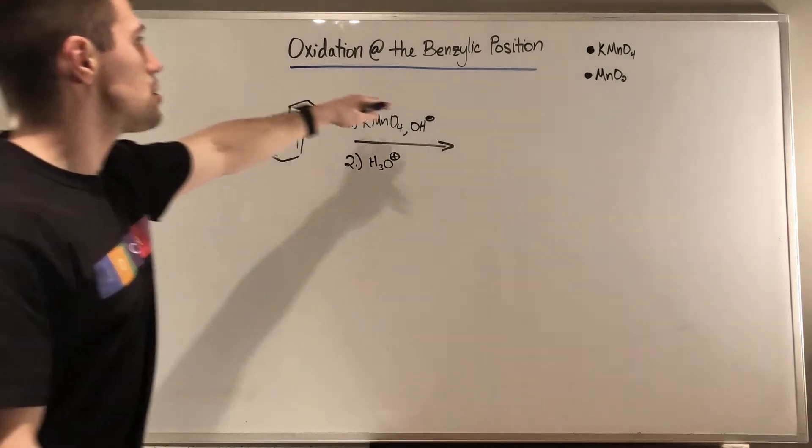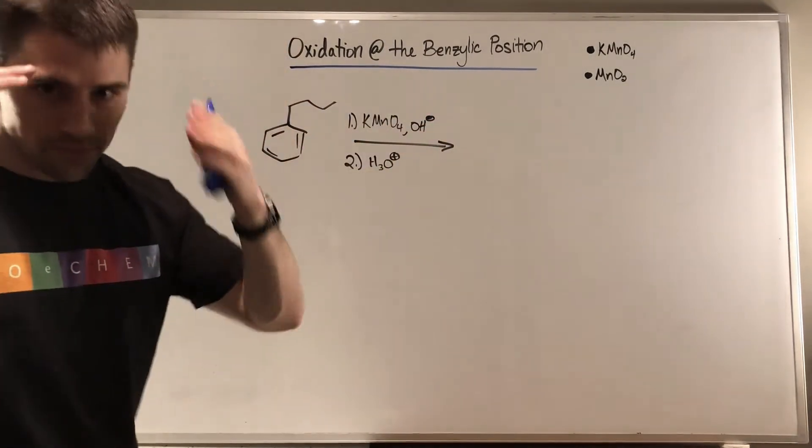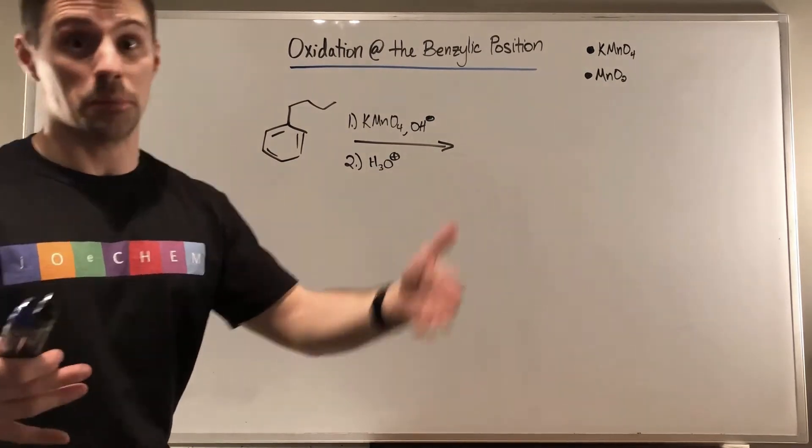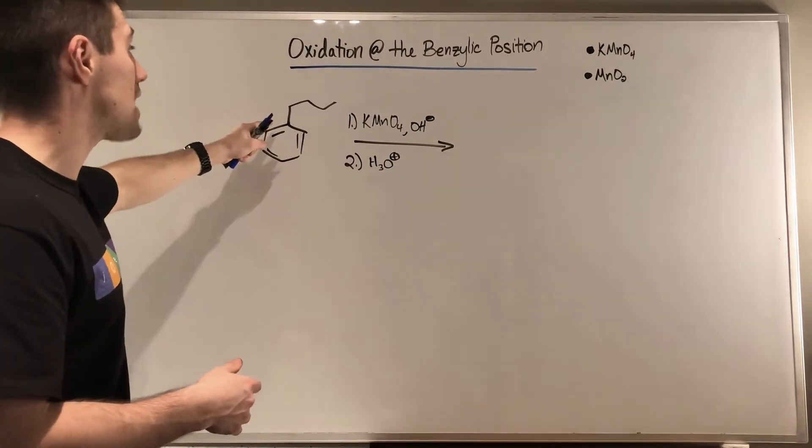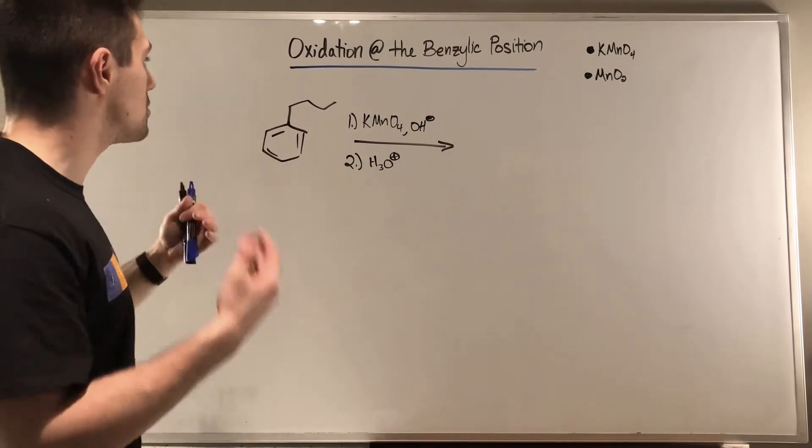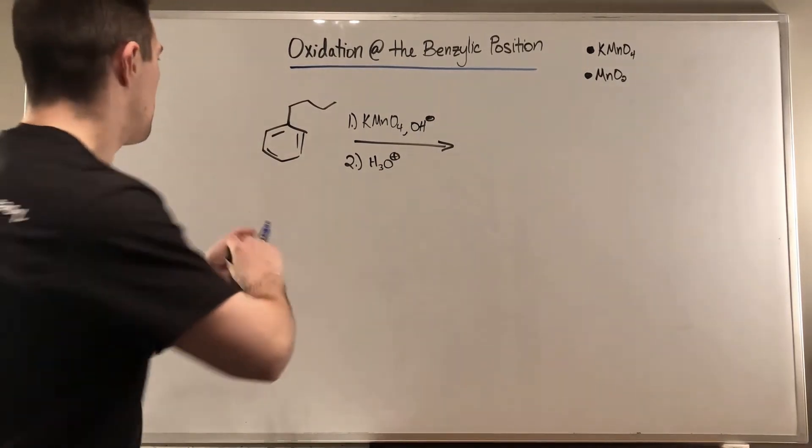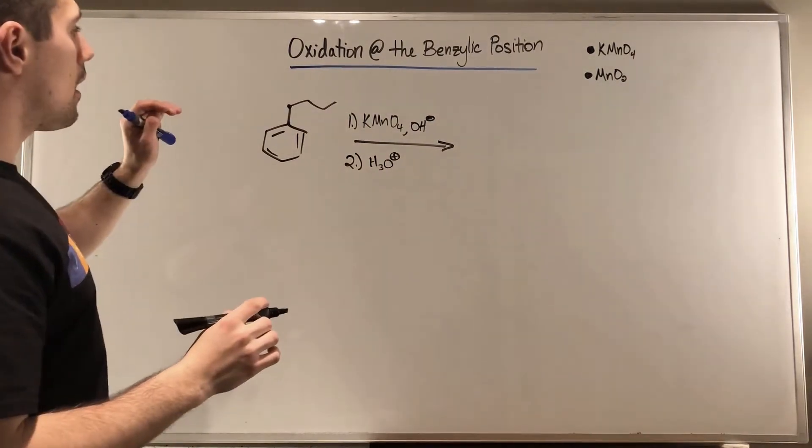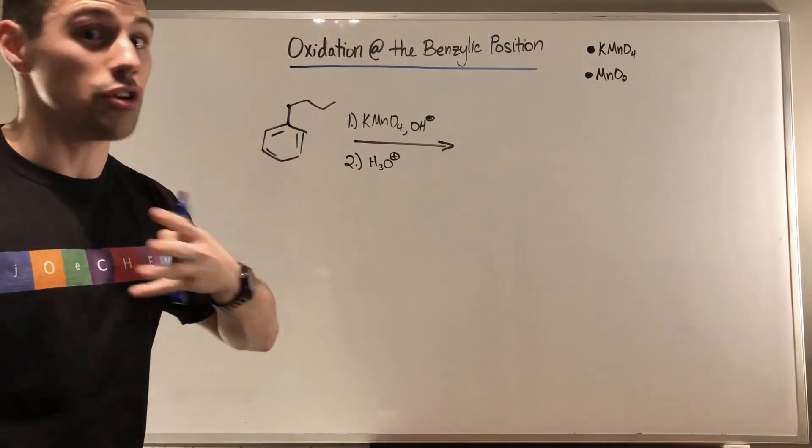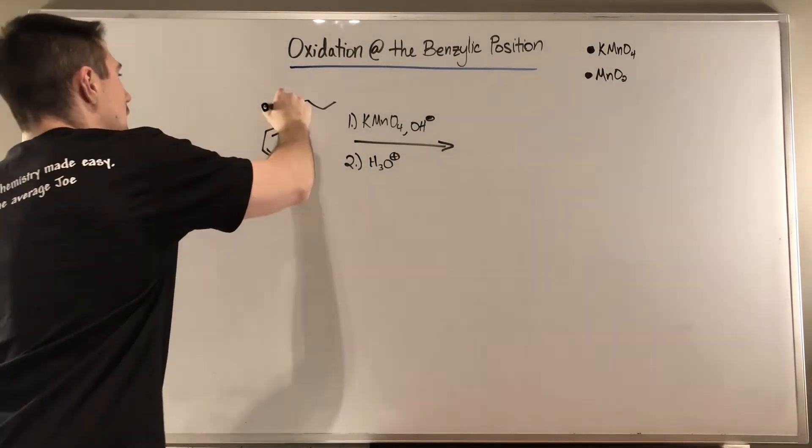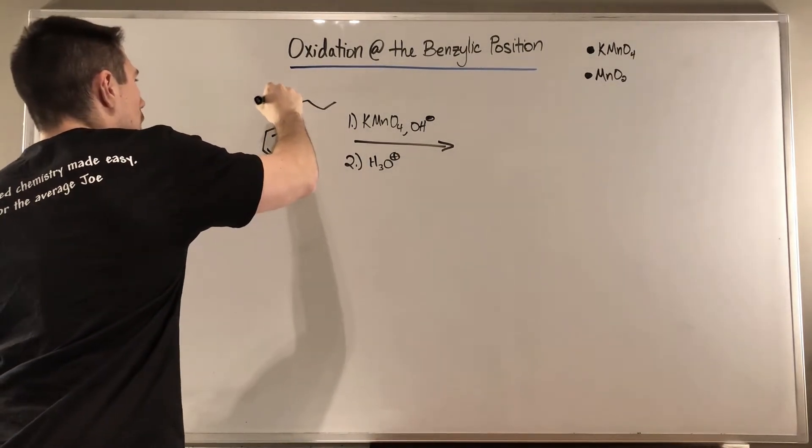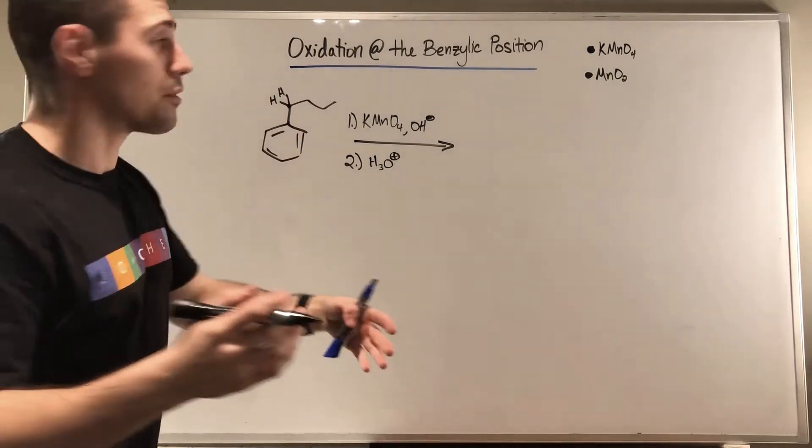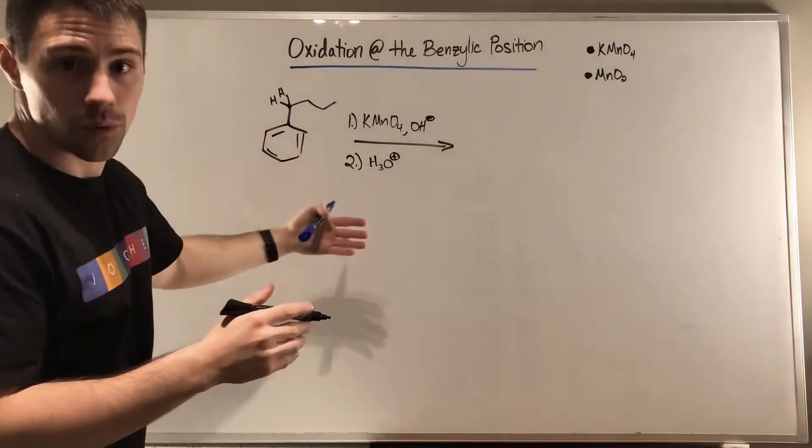Okay, so when we do oxidation at the benzylic position, let's remember, obviously we're going to need a carbon that is in the benzylic position. So, in this scenario, we just have this alkane chain coming off the benzene ring. That fits the bill. So, your only criteria for this reaction is that you need to have at least a CH bond on that benzylic carbon. And clearly we have two. So, we're good to go.